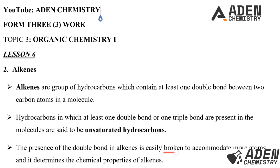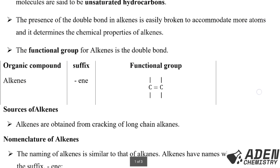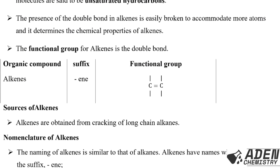The presence of the double bond in alkenes is easily broken to accommodate more atoms, and this determines the chemical properties of alkenes. The functional group for alkenes is the double bond. The hydrocarbon we are dealing with is alkenes, and it has a suffix of '-ene', and this functional group is the double bond between two carbon atoms.